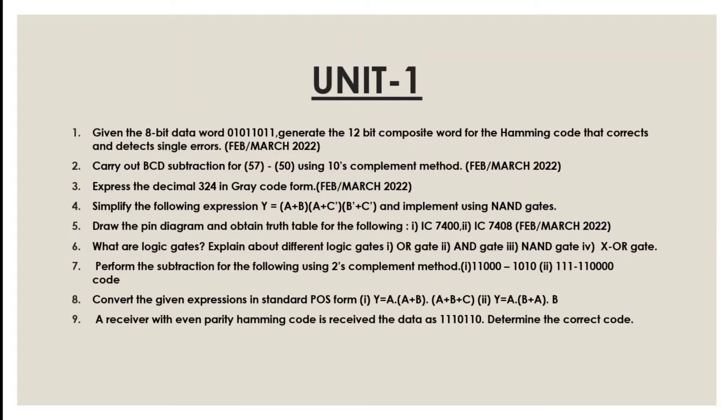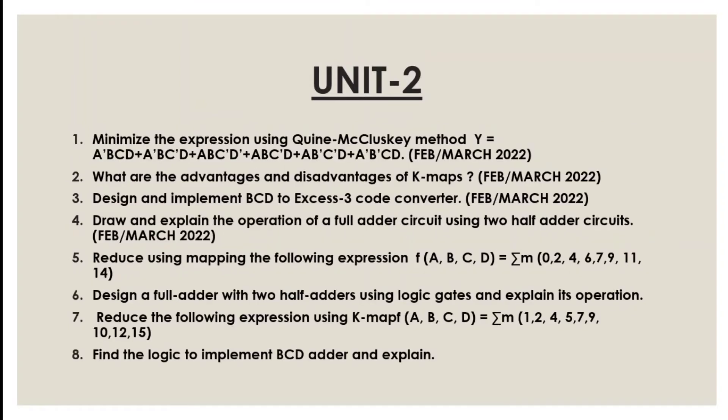Also convert Y = AB̄ + ĀB to standard form. Next question: A receiver with even parity Hamming code is received. The data has 3110101 — determine the correct code. Next, Unit 2.